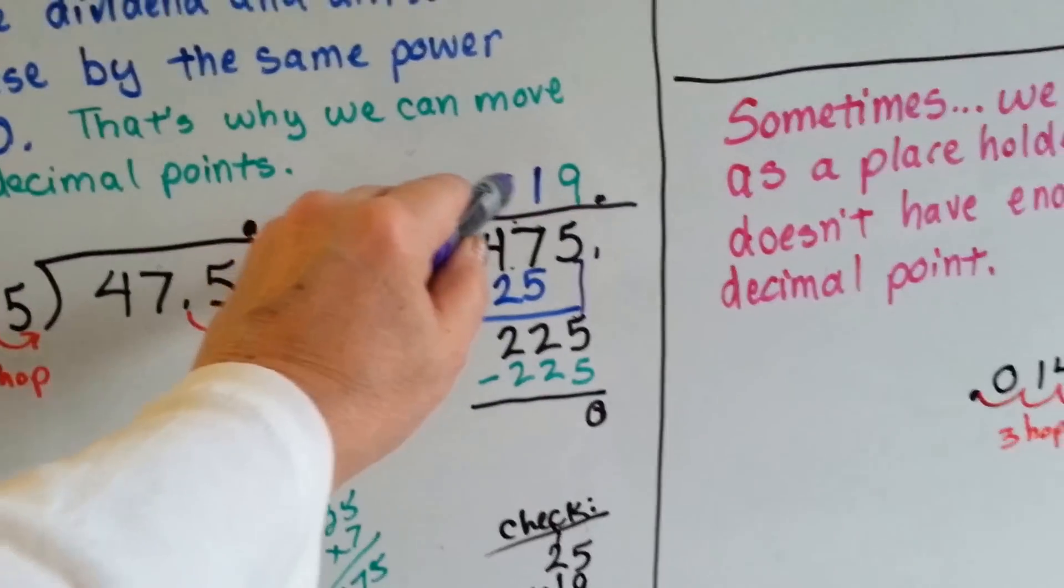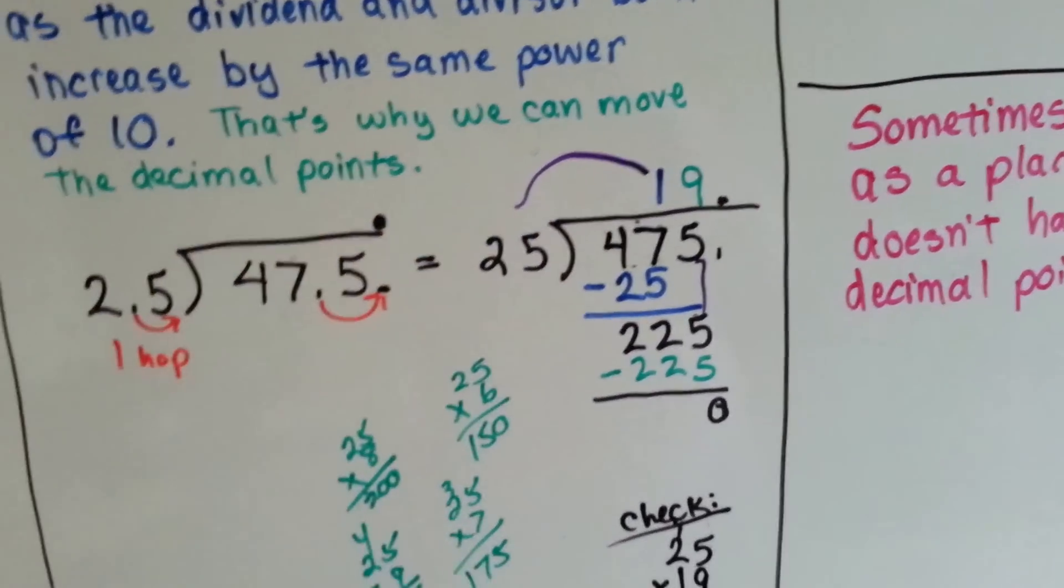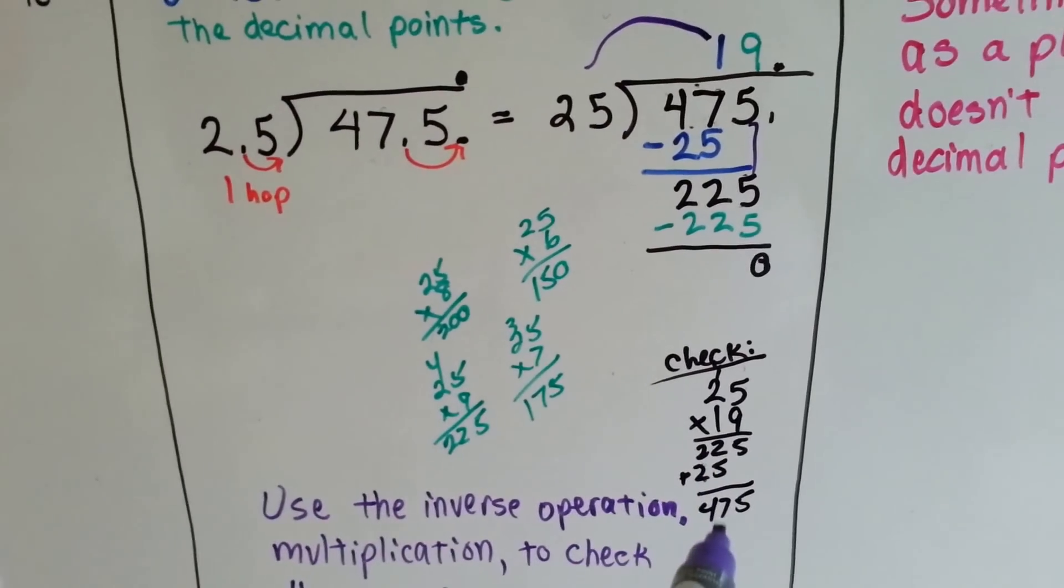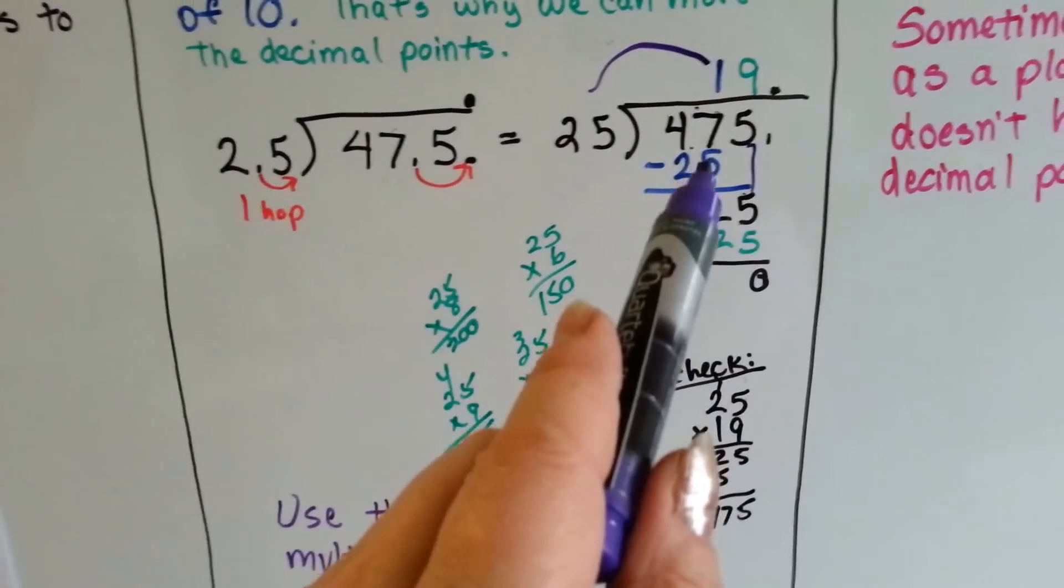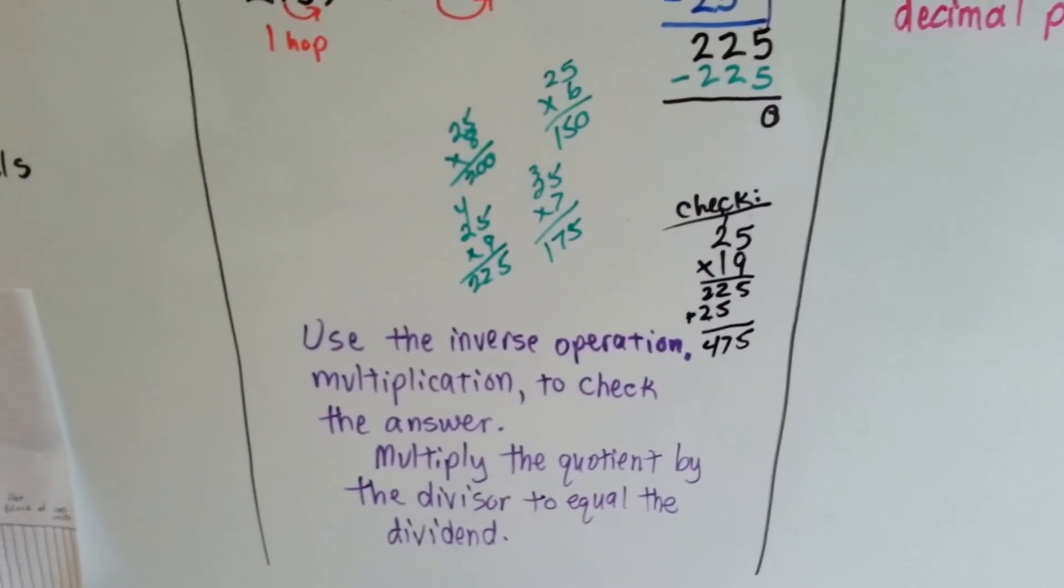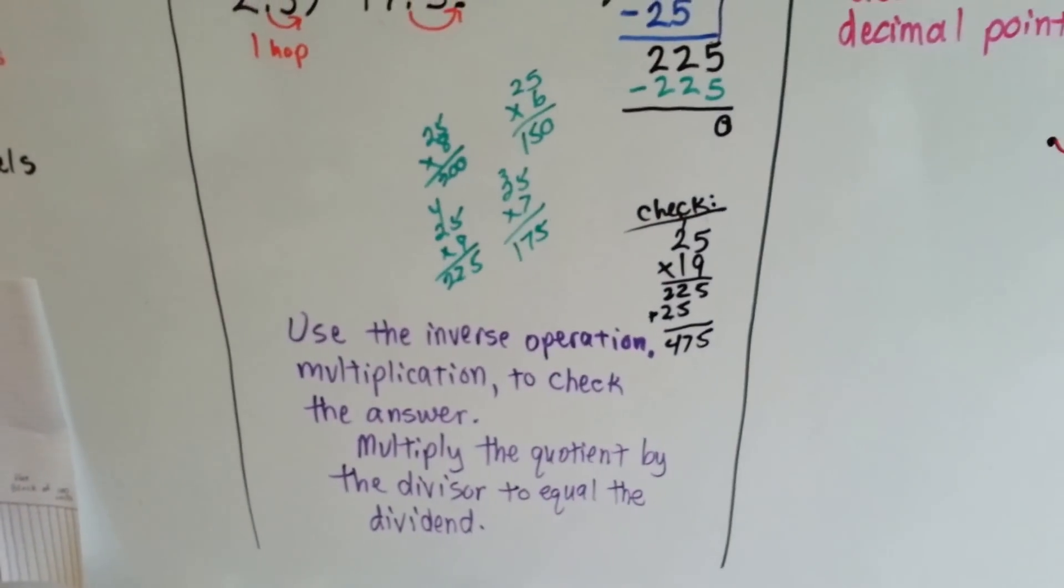Then I can multiply the quotient and the divisor to each other to check it. And if I come up with 475 as the product, I know I did it correctly because that's the amount of the dividend. You use the inverse operation to check it.